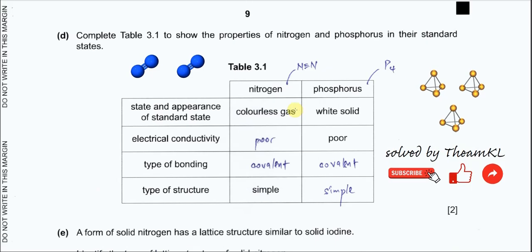Part D: Complete the table to show the properties of nitrogen and phosphorus in their standard states. Electrical conductivity for nitrogen is poor — it is a non-metal and cannot carry charge or electrons. Phosphorus also has poor electrical conductivity. For type of bonding, you must put the strongest bond: in the nitrogen molecule there are three covalent bonds (one sigma, two pi), so put covalent bond. For phosphorus, also put covalent bond between phosphorus atoms.